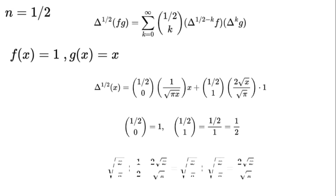So: the square root of x over pi plus 1 over 2 times 2 times the square root of x over the square root of pi equals the square root of x over pi. This matches the Riemann–Liouville half derivative of x. Our framework can even handle crazy operators like delta to the power of the square root of 2, opening up a whole new world of math.